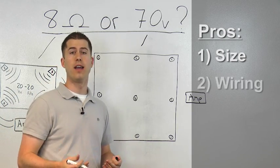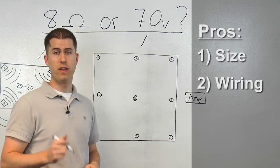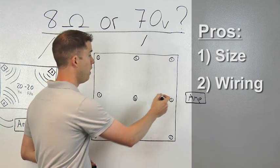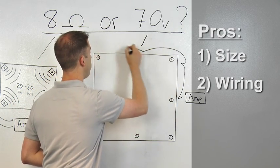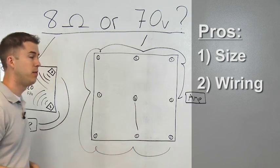Another advantage is the wiring, and this is two-fold. Due to the higher voltage, longer wire runs can be achieved over a thinner gauge. The second part is since 70-volt can be run in series, or by daisy chain, the entire installation is much simpler.